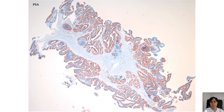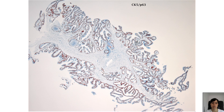PSA, or NKX3.1 if you prefer, will beautifully highlight the prostatic nature of the epithelium lining these lesions. However, you don't actually need to perform stains — this is a purely histomorphological diagnosis. Stains were performed here just for illustrative purposes. PSA nicely highlights the luminal cells of the prostatic epithelium. Basal cell markers such as high molecular weight cytokeratin or p63, or a combination of both, show a retained basal cell layer — in this case in a beautifully continuous fashion — highlighting the benign nature of the prostatic epithelium lining these lesions.